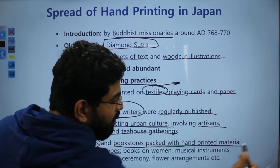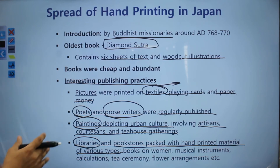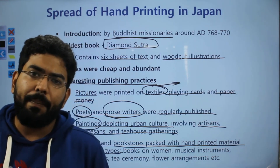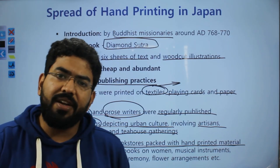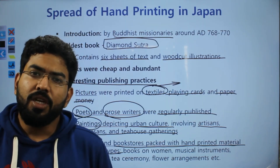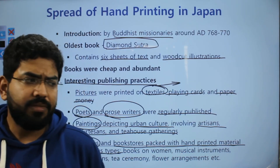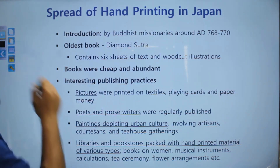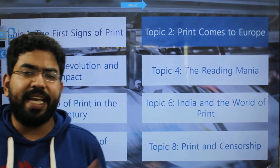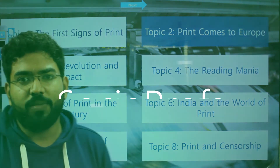Libraries and bookstores were packed with hand-printed material of various types. Japan's development was similar to China's in some ways, but the unique practices found only in Japan made Japan's print culture a case study in itself. These were the earliest signs of print in China and Japan. In the next video, we'll be discussing the coming of print to Europe. Thank you so much.